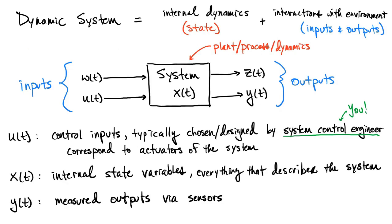In this course we're going to think of dynamic systems as the combination of internal dynamics with interactions with the environment. The internal dynamics is a set of rules the system follows, and oftentimes we'll express those in terms of differential equations. Those are set by the physics, chemistry, biology, or whatever describes that system — describing how its state, everything that describes the system, evolves over time. There will be factors that change the system, and those are our inputs.